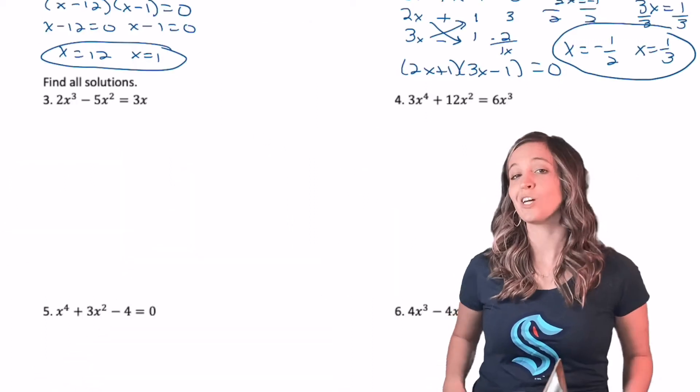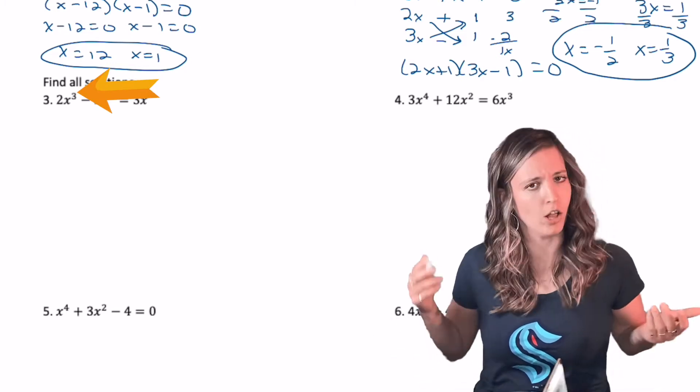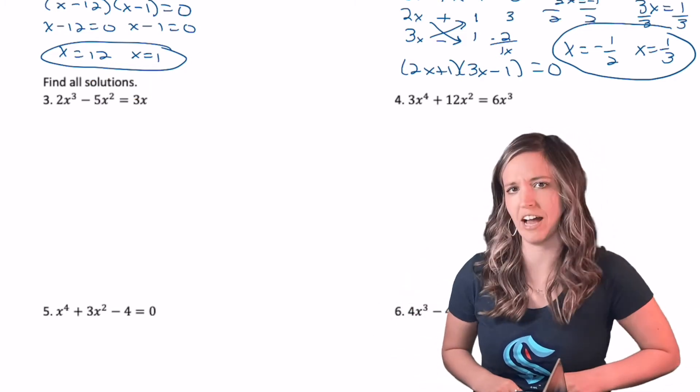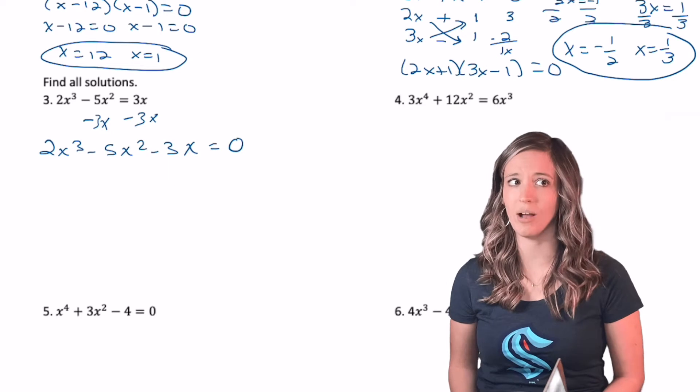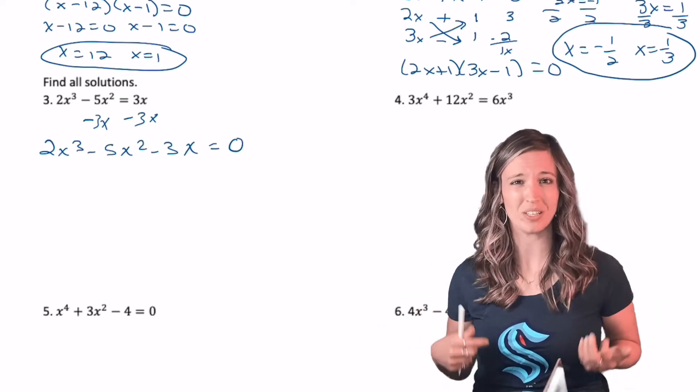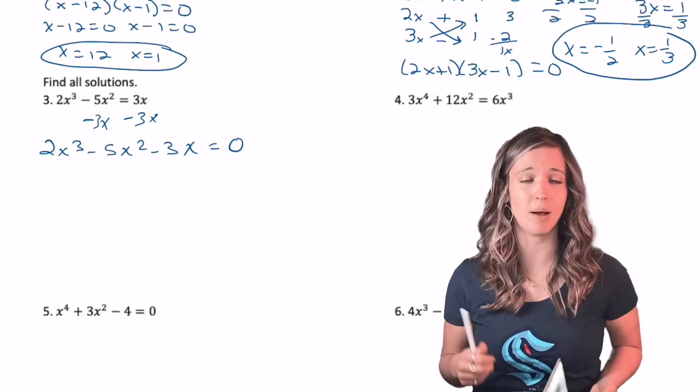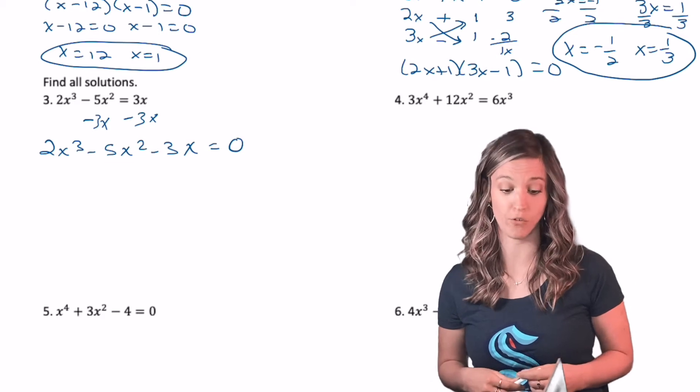All right, so quadratics are two solutions. So number three is a cubic. How many solutions would you expect? Three. Let's get it set equal to zero and see how we can factor. All right, it's cubic. So I have my sum or difference of perfect cubes, but this is not that. So let's try to use GCF, starting strong. All three terms have an X in common. So I could factor out an X and then factor out the quadratic that's left over.